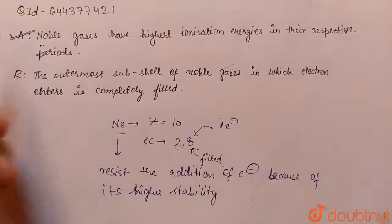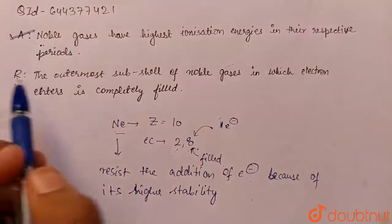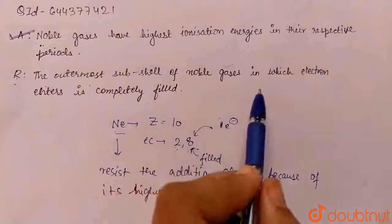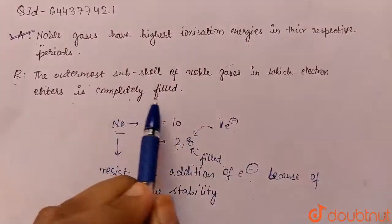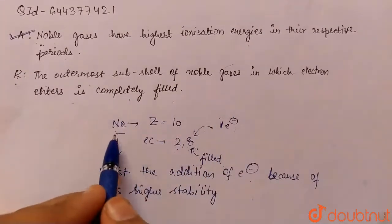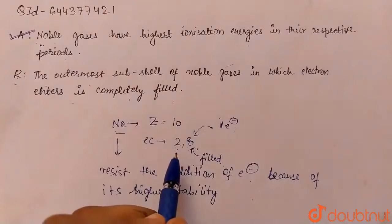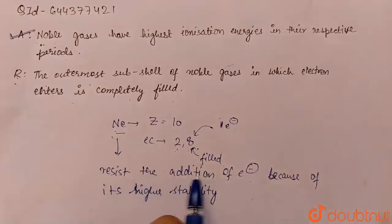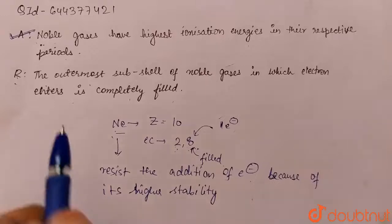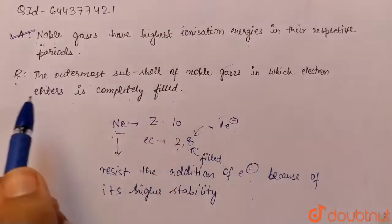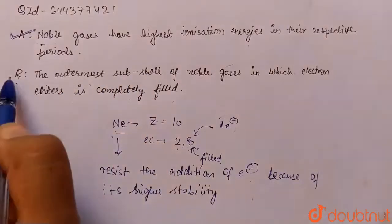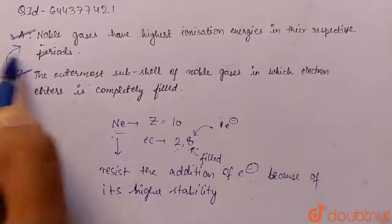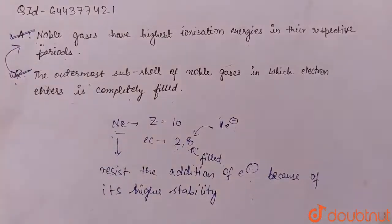Now for the reason: the outermost subshell of noble gases into which an electron would enter is completely filled. This is also correct. Since noble gases have a stable electronic configuration, they resist the addition of electrons, resulting in greater ionization energy. Therefore, the reason is correct and is the correct explanation of the given assertion. I hope you understood the question — do practice this question. Thank you.